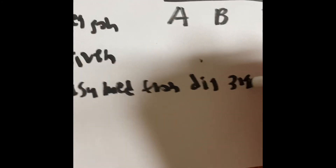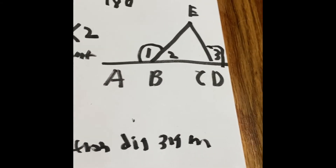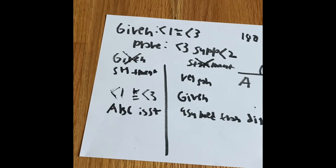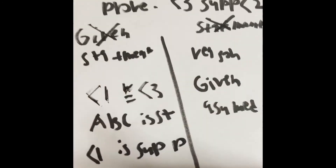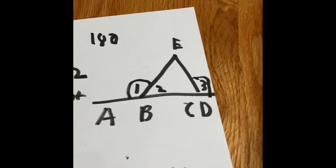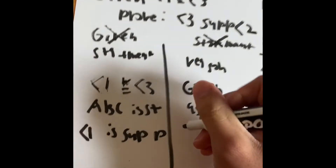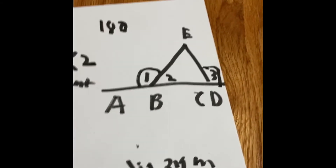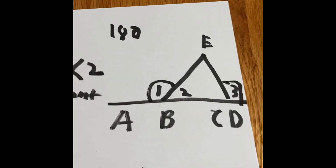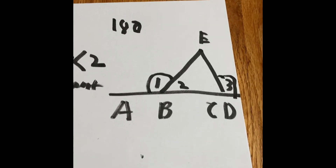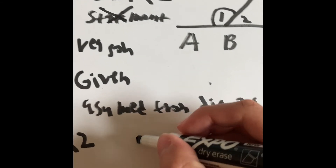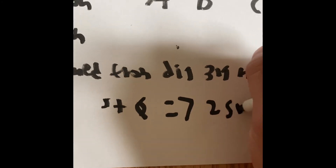In geometry, you can assume straight angles when they are clearly straight. We can now say angle one is supplementary to angle two. The reason we identify ABC as straight first is so we can then conclude angle one is supplementary to angle two. If we stated the supplementary relationship before identifying the straight angle, people won't understand because it's not in order.